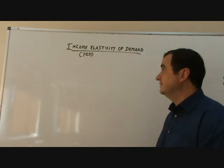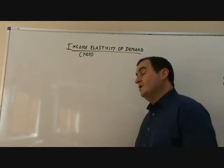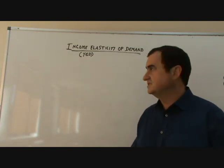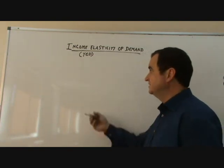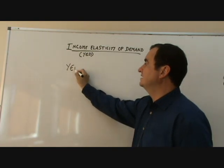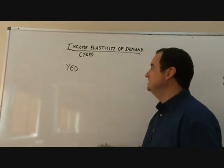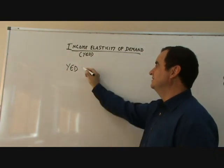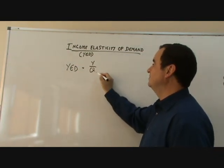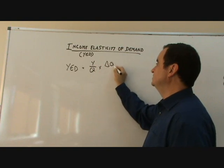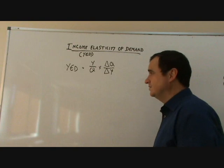Income elasticity of demand, then. The equation for calculating the value of income elasticity of demand is as follows. We use Y for income, because I is reserved for investment. So income elasticity of demand is Y divided by Q, times the change in quantity over the change in income. Let me give you an example.